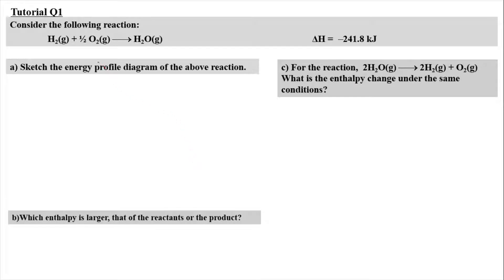For question 1, consider the following reaction where 1 mole of hydrogen gas reacts with half a mole of oxygen gas in order to produce water vapor. The enthalpy change given here is negative 241.8 kilojoules. In question (a), we have to sketch the energy profile diagram for the above reaction. H₂ and oxygen gas are the reactants and water vapor is the product.